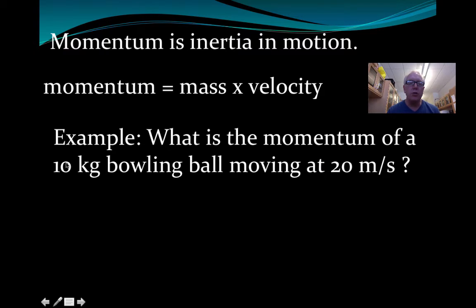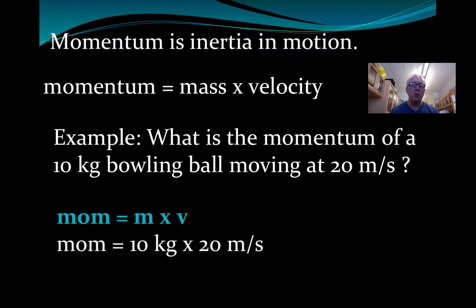So here's an example for us. How about that bowling ball? If you had a 10-kilogram bowling ball moving at 20 meters per second, what is the momentum? Well, as always, we're going to identify the information. Here is our symbol for momentum, MOM we're going to use. The mass is 10 kilograms and the velocity is 20 meters per second. So the momentum is 200 kilogram meters per second, and that's an introductory to a momentum problem. Set up the same way as D equals VT or F equals MA, pretty straightforward algebraically.